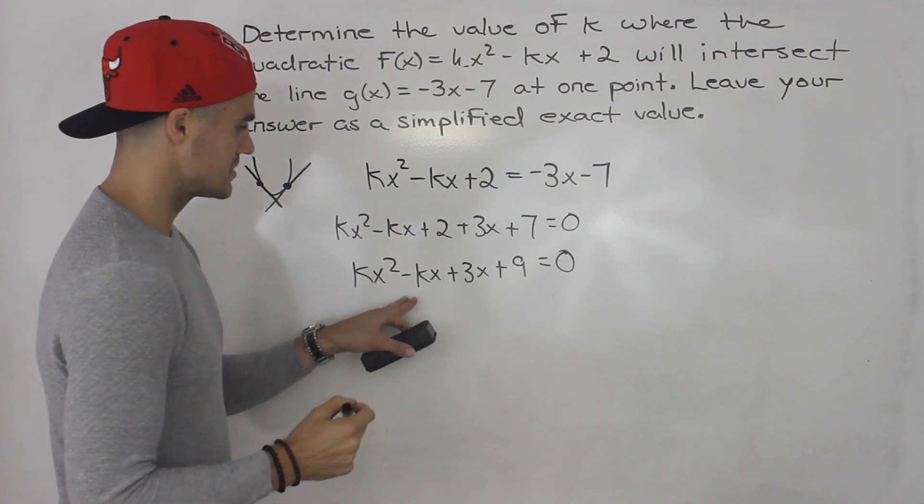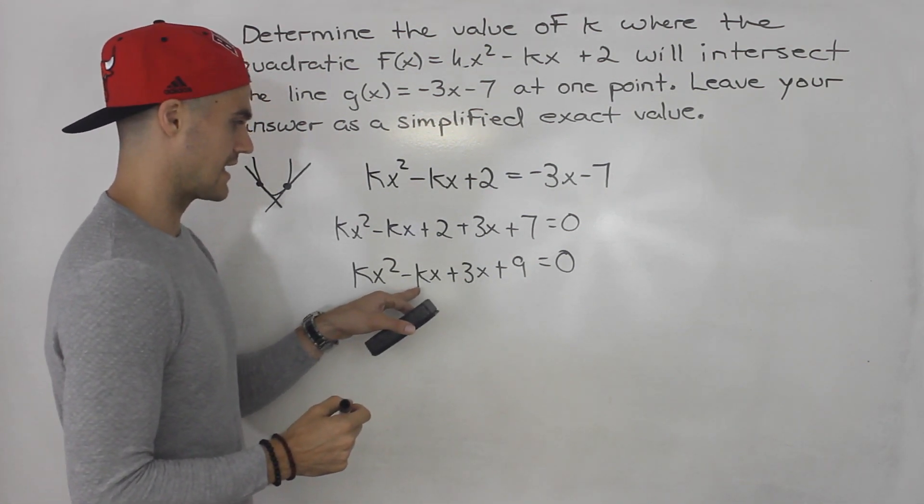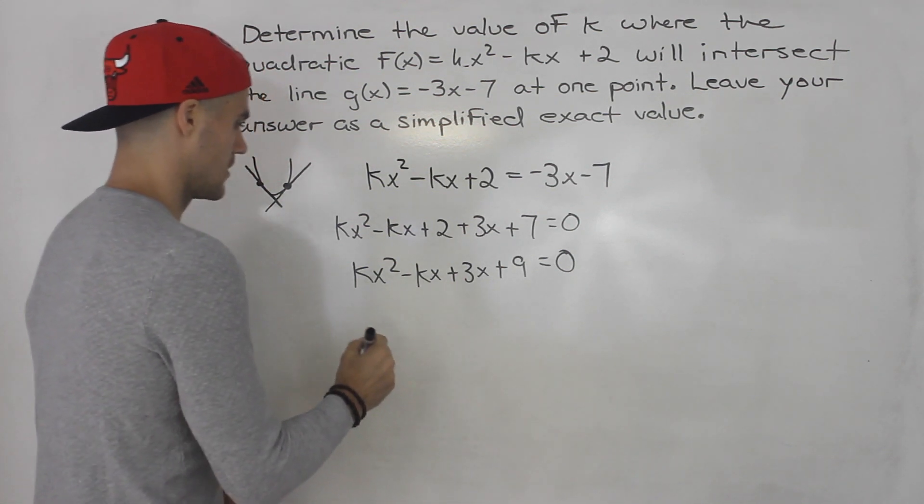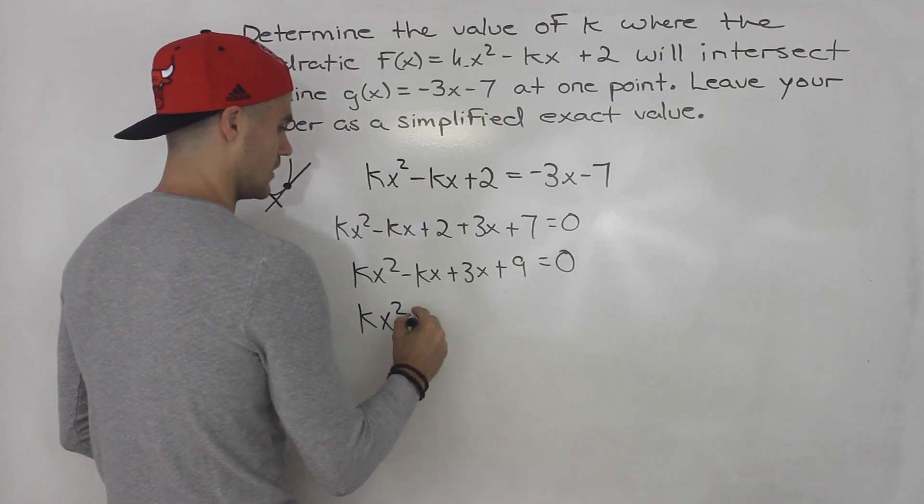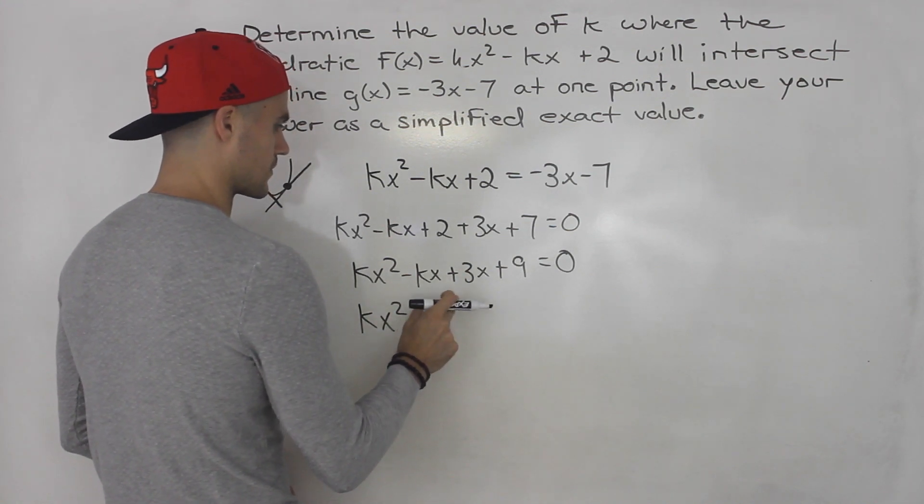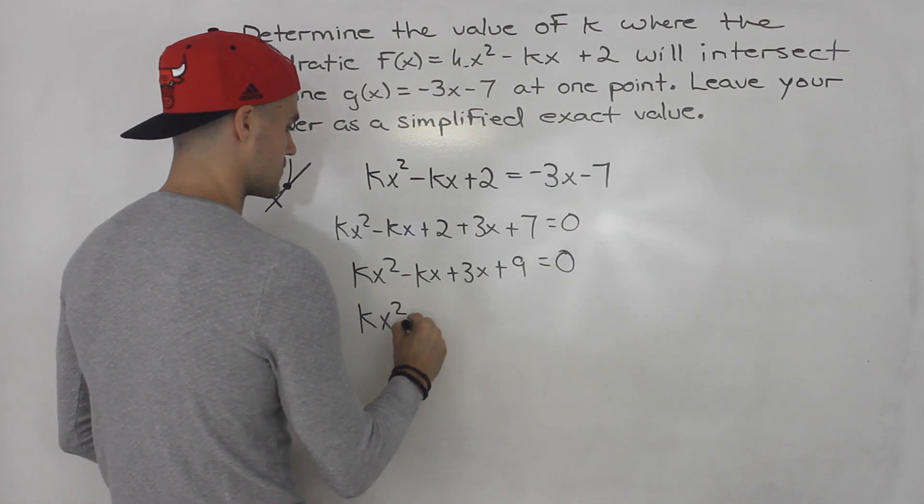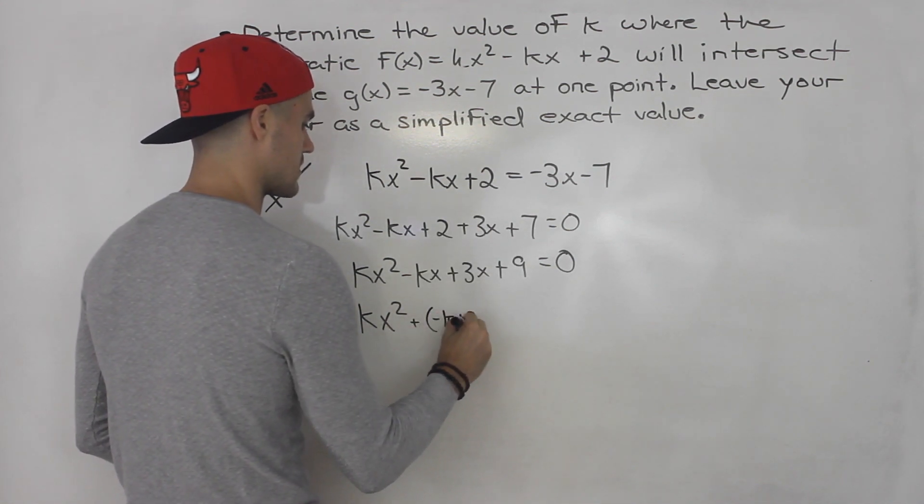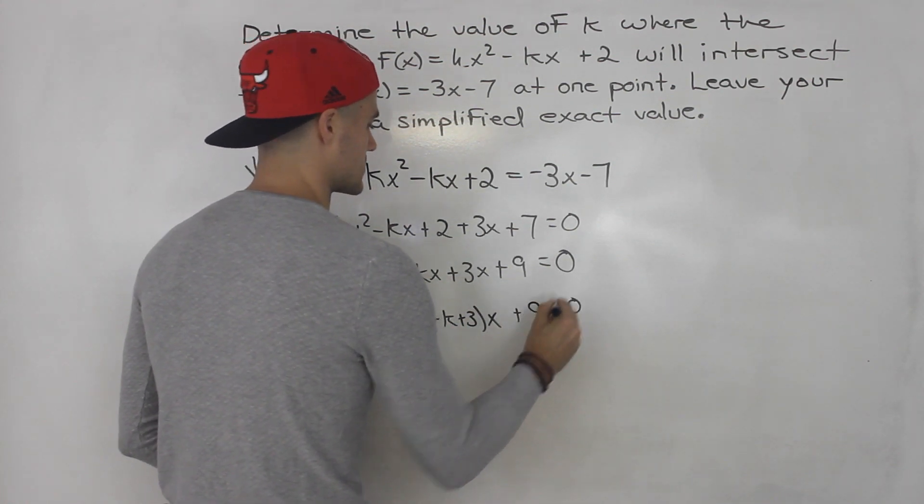And then if you remember, notice that minus kx plus 3x, those are like terms, but we can't add these coefficients because of this k here. But what we can do is we can factor out the x and put it in front so we can have negative k plus 3x plus 9 is equal to 0.